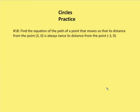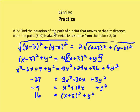In the last problem, I'm asked to find the equation of the path of a point that moves so that its distance from the point (3, 0) is always twice the distance from the point (negative 3, 0). The distance from (3, 0) equals twice the distance from (negative 3, 0), so: the square root of x minus 3 squared plus y squared equals 2 times the square root of x plus 3 squared plus y squared.